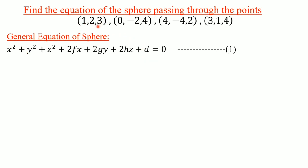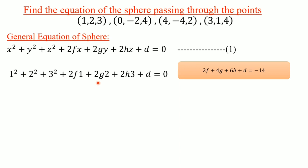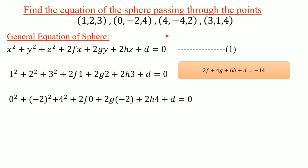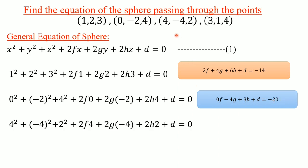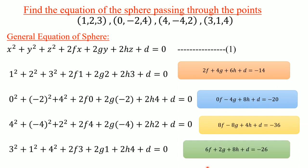For the first point (1, 2, 3), substituting x = 1, y = 2, z = 3, we get: 2f + 4g + 6h + d = −14. Similarly, substituting the other three points we get one equation for the second point, one for the third point (4, −4, 2), giving the third equation, and one for the last point (3, 1, 4) giving the fourth equation. So we have four equations in four unknowns.